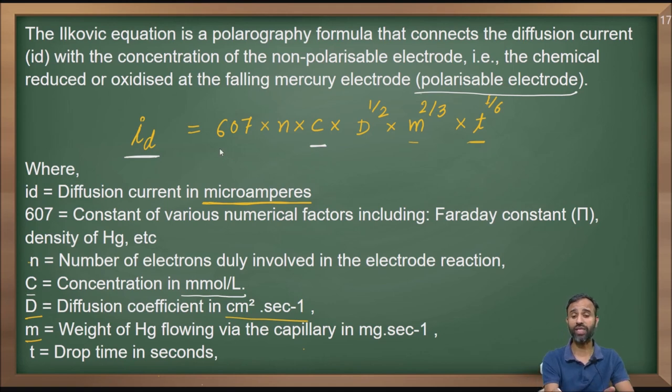What is this constant 607? It is a constant for these numerical factors, which includes Faraday constant, density of the mercury and all the other factors. So, you have to use this equation.